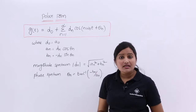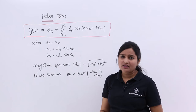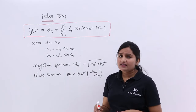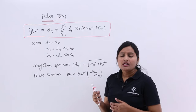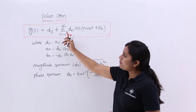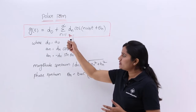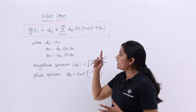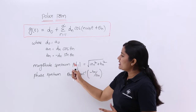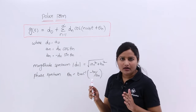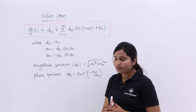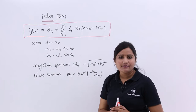Since cosine is an even function, cos(−θ) also gives cos(θ), but sine does not have that same convenient property. That is why we consider cosine here. So the polar form of any function g(t) is equal to d₀ plus summation n equals 1 to infinity of dₙ cos(nω₀t + θₙ), where the modulus of dₙ refers to the magnitude spectrum, whereas θₙ is called the phase spectrum.